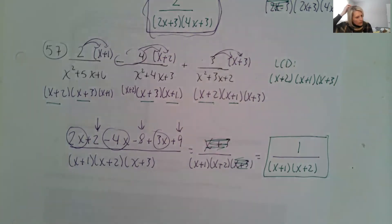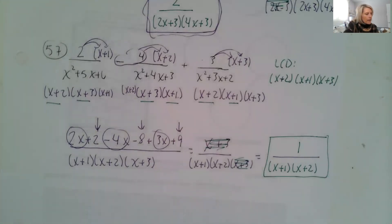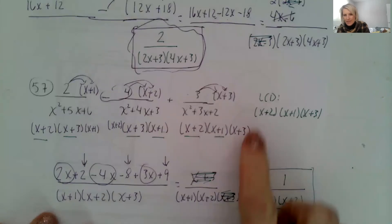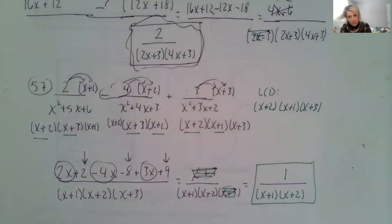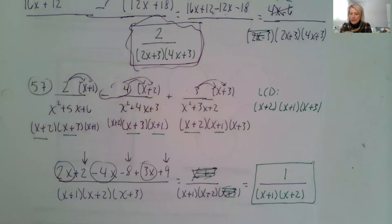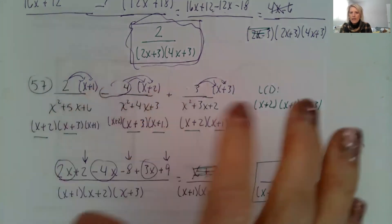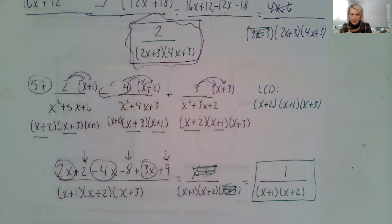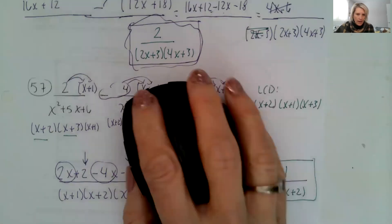The last lesson we're going to do for Chapter 5 is going to be 5.5, and it's all about rational equations. We're going to essentially use these LCDs to make things actually simpler, if you can believe it. So just keep practicing factoring and finding your LCD and building up your fractions, because we're going to use that idea in Lesson 5.5.